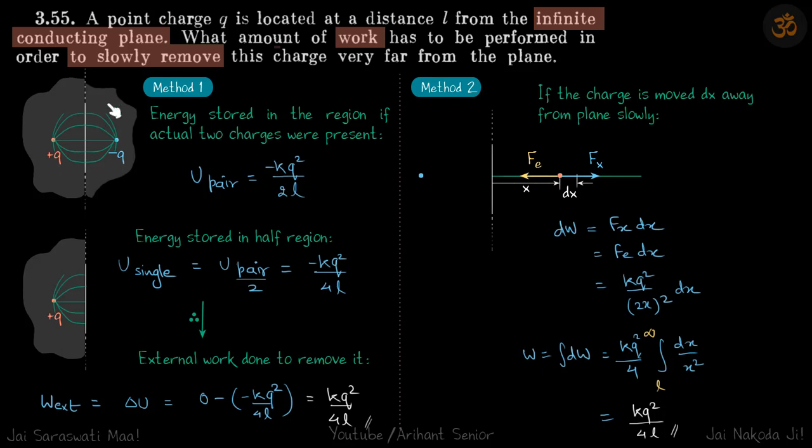First method is by energy stored in the region. By image method, we can say that the electric field lines here are similar to that if you put a minus Q charge here. So now energy is stored in the entire region if there are actual two charges present.